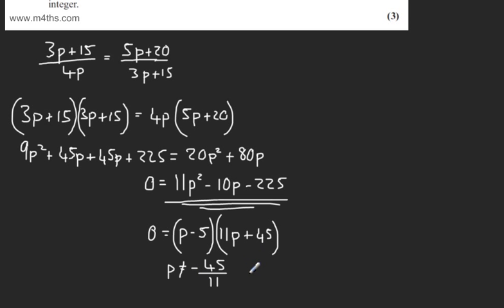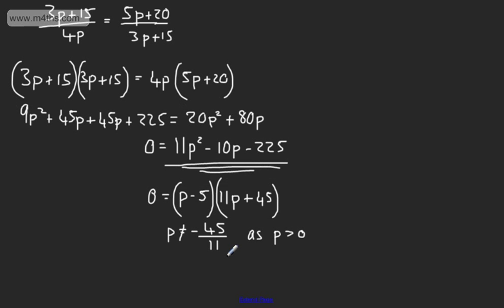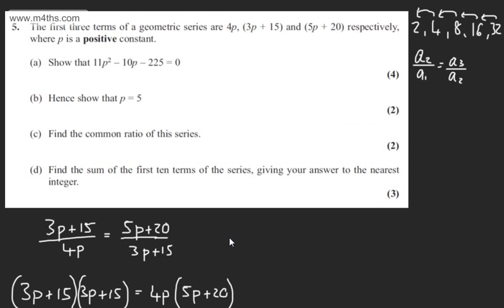p can't equal minus 45 over 11 as p is greater than 0. Therefore we can state that p equals 5 as required. So all I've done is factored the quadratic and shown that p can't be the other value.